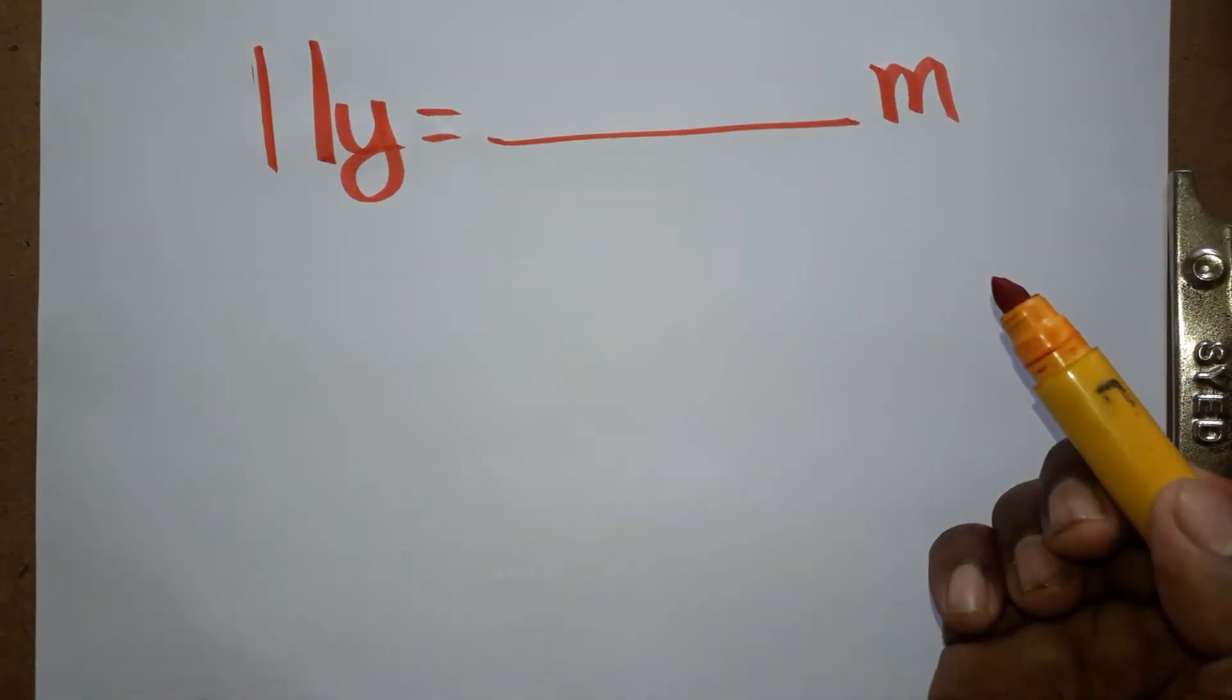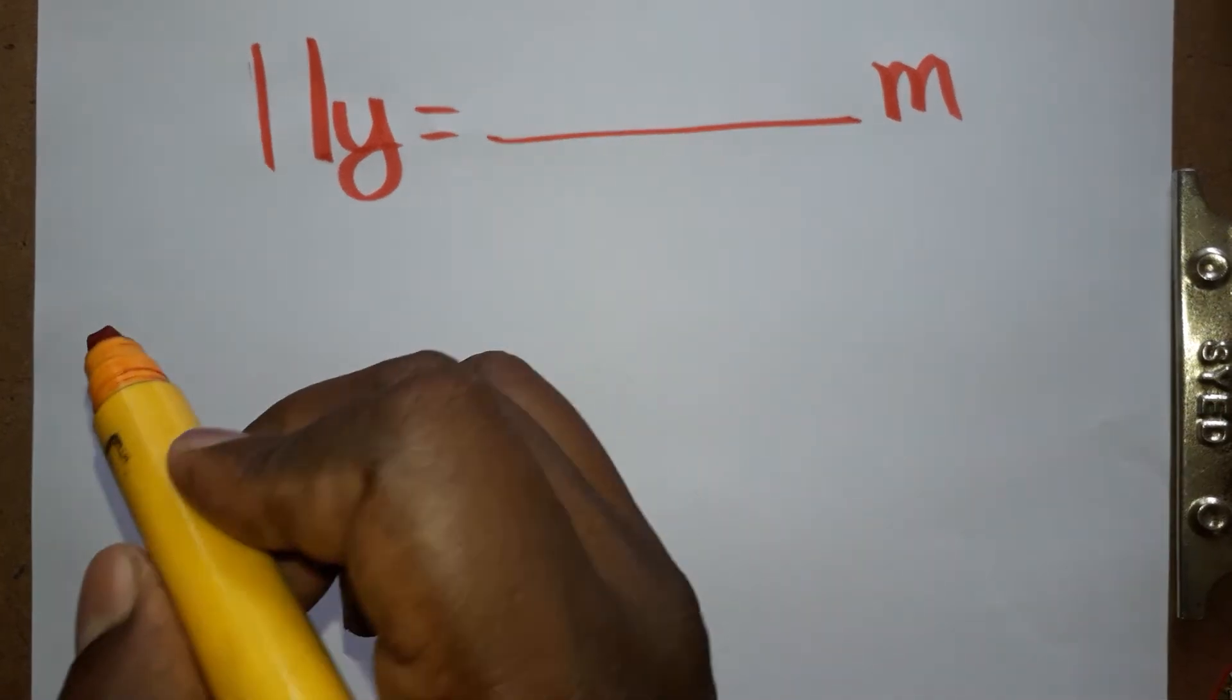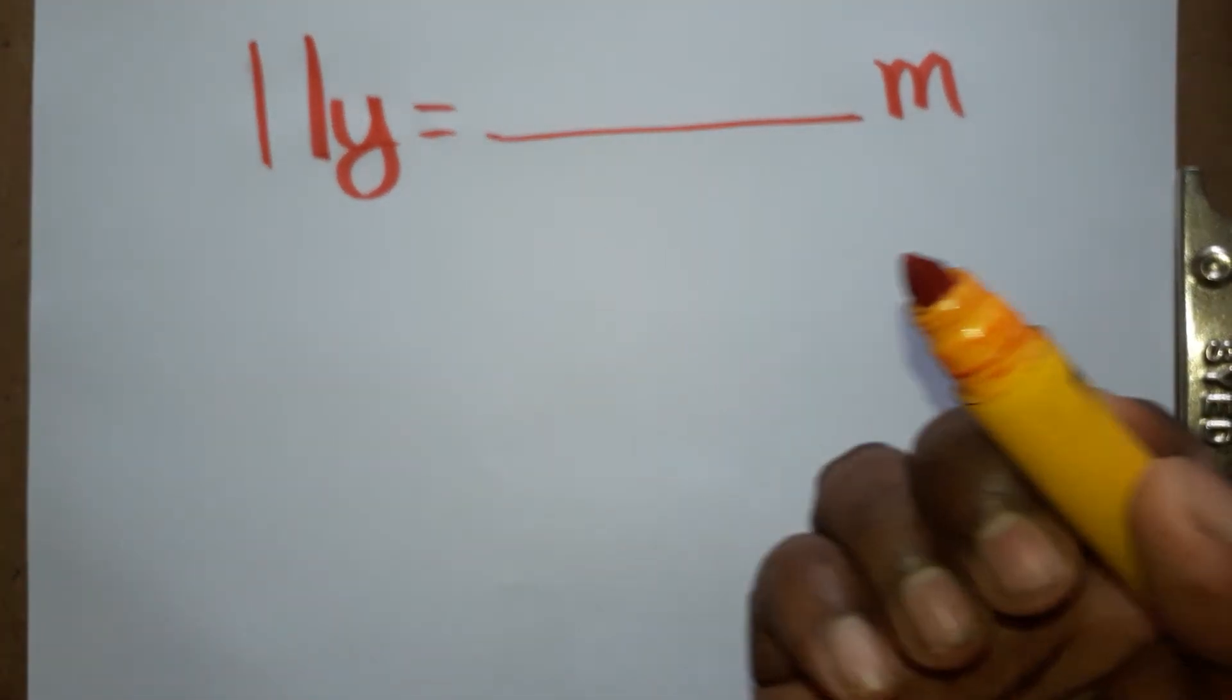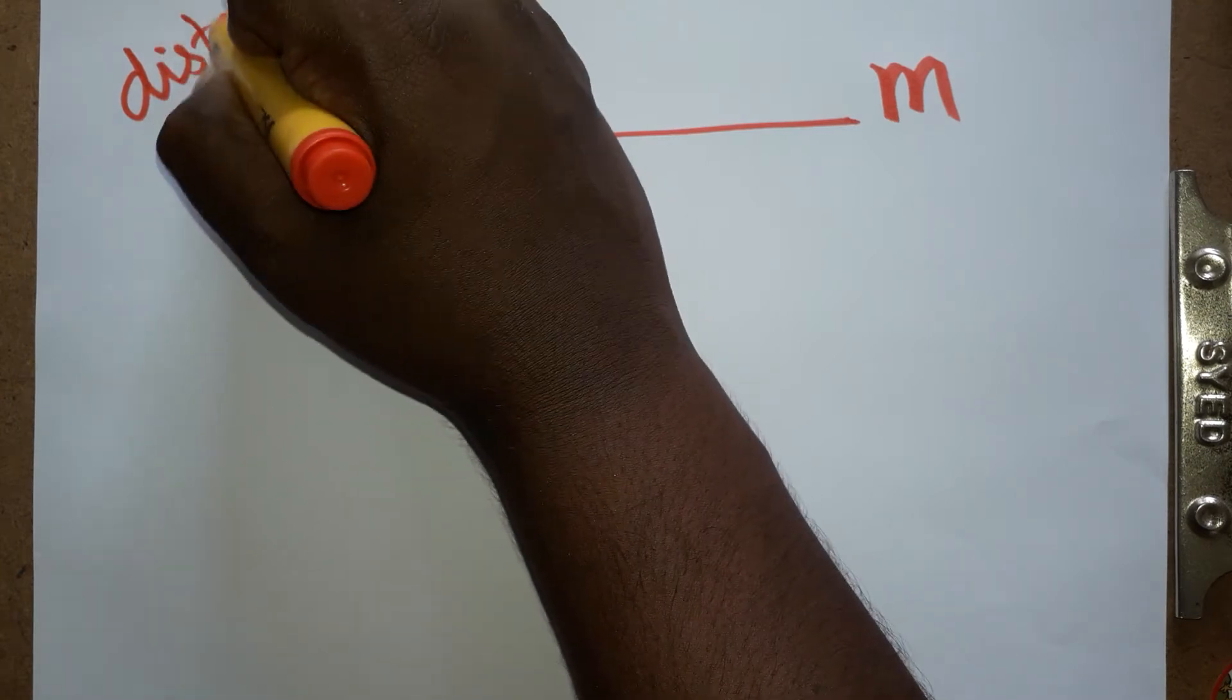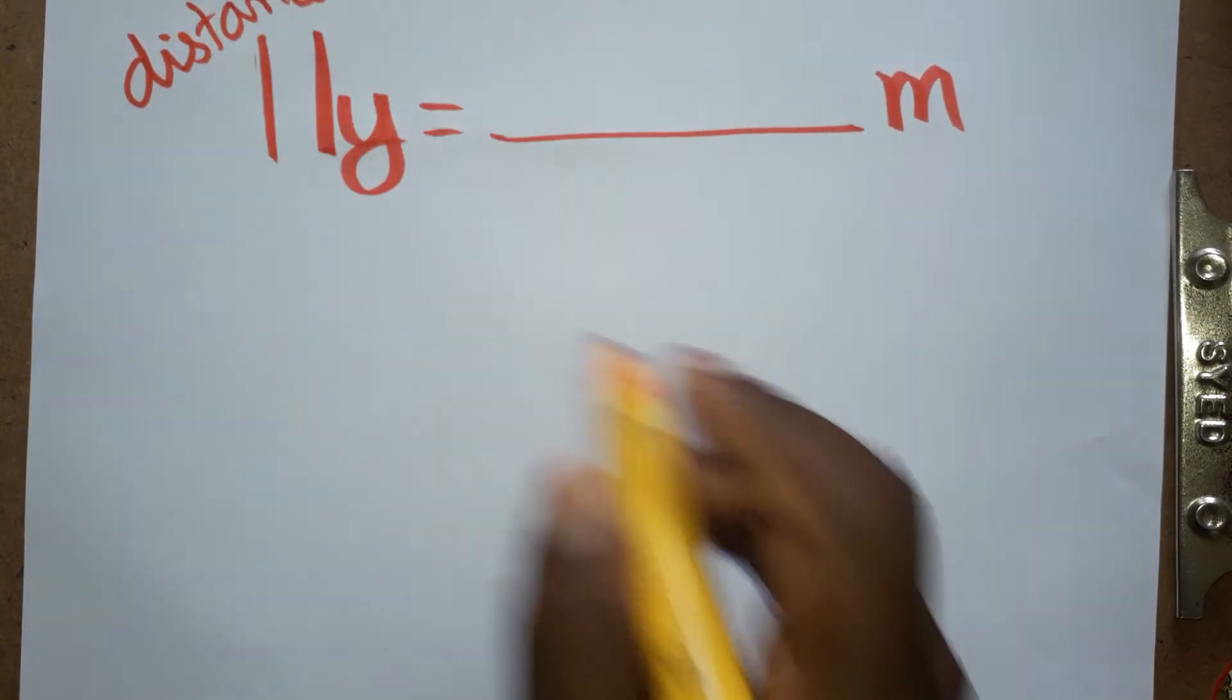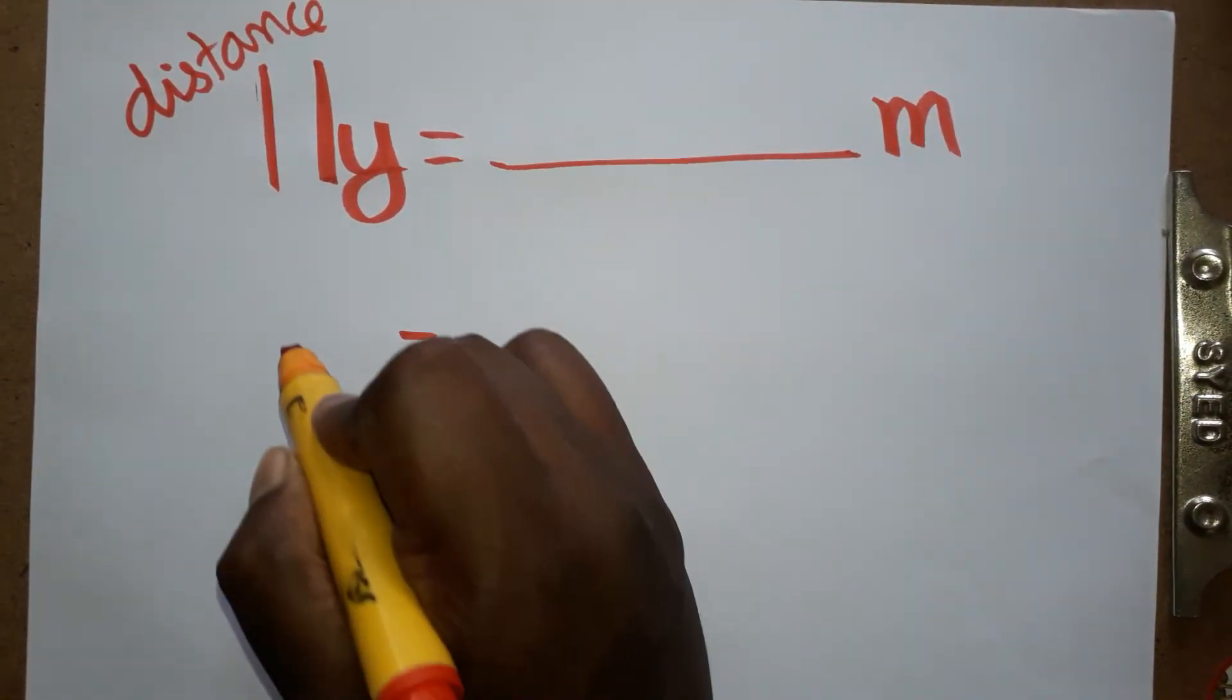Today we are going to learn what one light year equals in meters. What is a light year? Light year is a unit of distance. One light year is the distance light travels in one year.